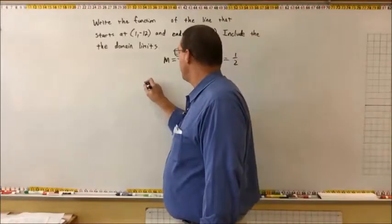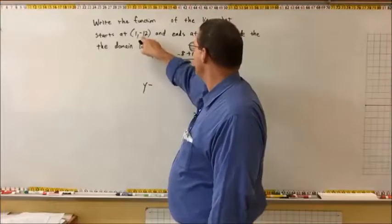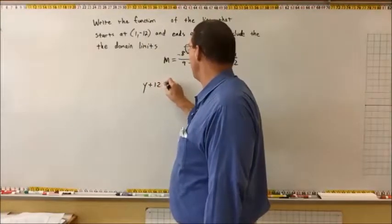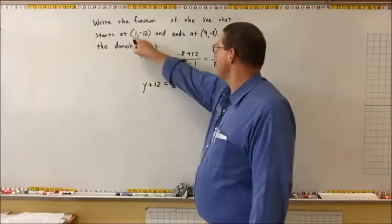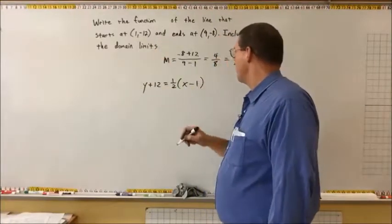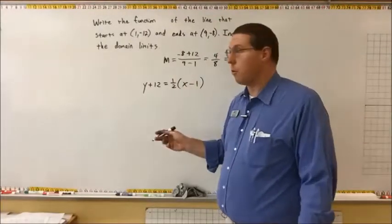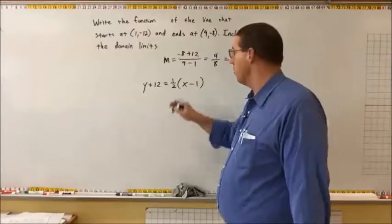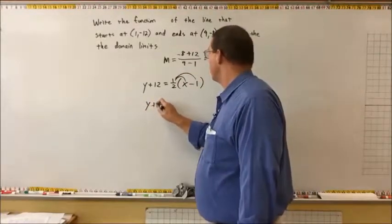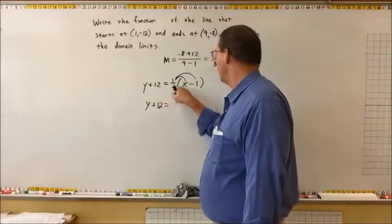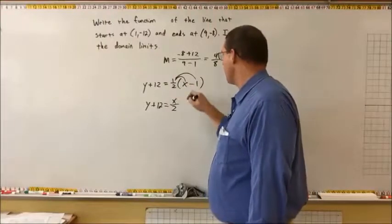We'll write it in point-slope form using point (1, negative 12): y plus 12 equals one half times (x minus 1). We want it in function form, so we distribute the one half: y plus 12 equals one half x minus one half.